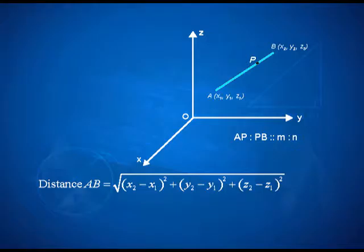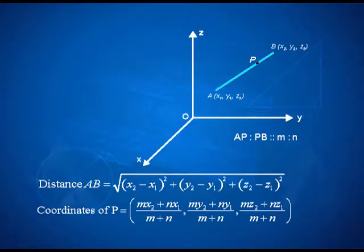At the same time, if I take a point P, dividing the segment AB internally in the ratio m is to n, then the section formula gives me the coordinates of the point P as mx₂ plus nx₁ by m plus n, my₂ plus ny₁ by m plus n, and the z coordinate as mz₂ plus nz₁ by m plus n. So, this is the same two results applicable in three dimension as well.